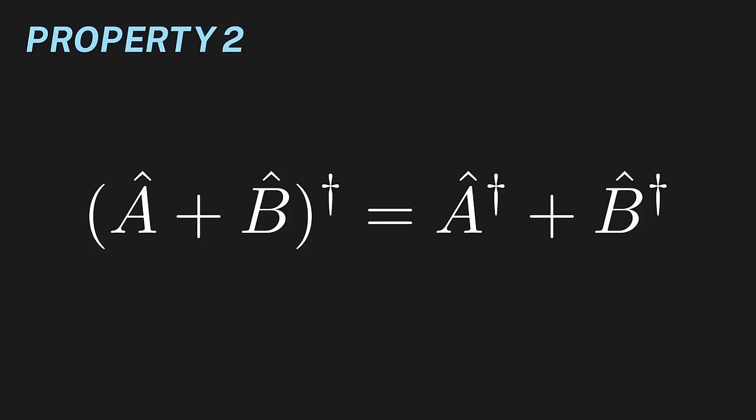First, the Hermitian adjoint of the Hermitian adjoint is the operator itself. Second, the Hermitian adjoint of a sum is the sum of the Hermitian adjoints.